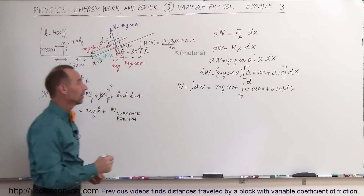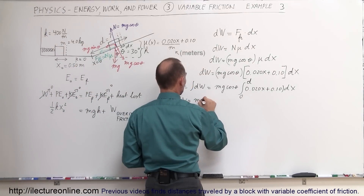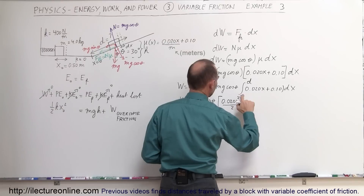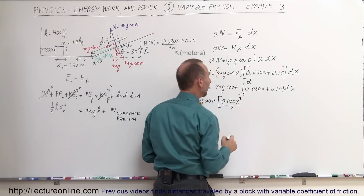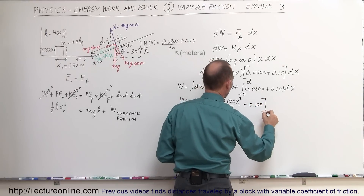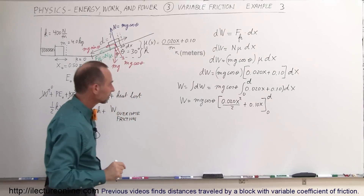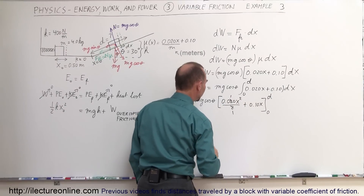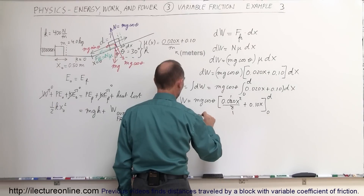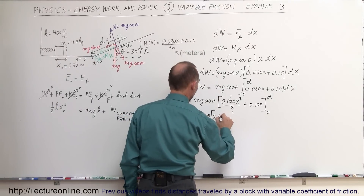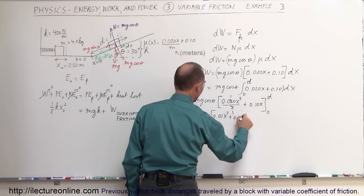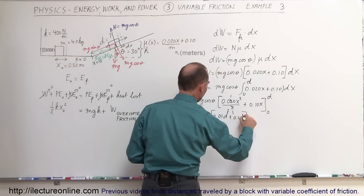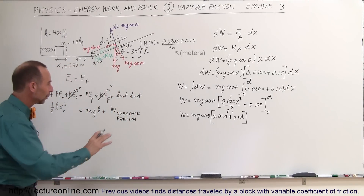Evaluating the integral, the work done equals MG cosine theta times [0.020x²/2 plus 0.10x] evaluated from 0 to d. The 2 in the denominator simplifies the 0.020 to 0.01. Plugging in the limits, with the lower limit giving zero, the result is: work done equals MG cosine theta times (0.01d² plus 0.1d).